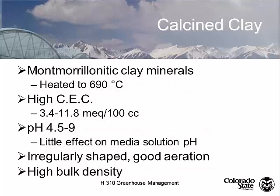Calcined clay is basically kitty litter — it's a montmorillonite clay, which is a double-lattice clay with a high cation exchange capacity of 3.4 to 11.8. It doesn't really affect the pH when blended, but it does increase bulk density. Most people keep calcined clay on hand in their greenhouses more for chemical spills.